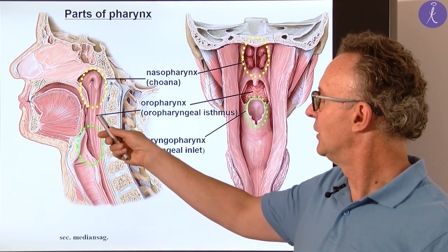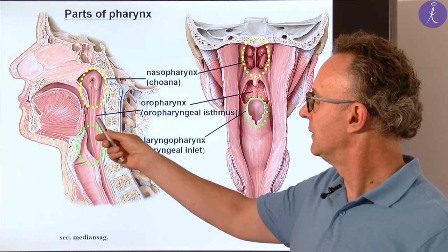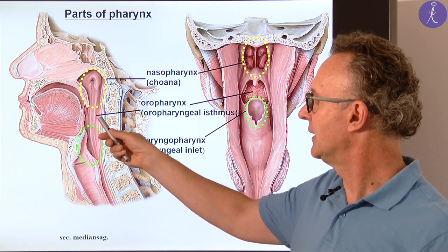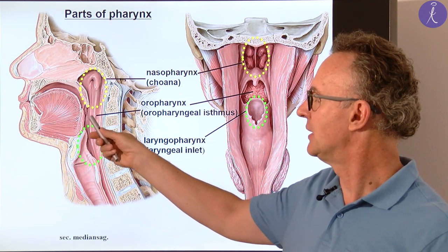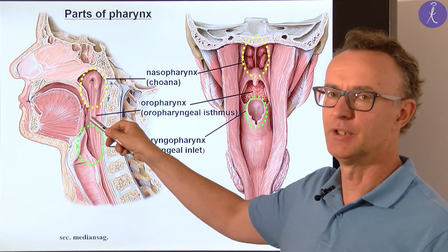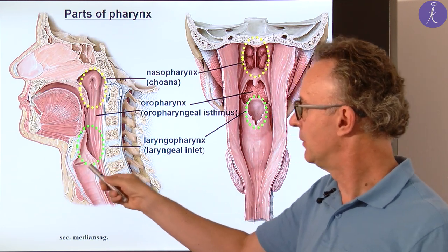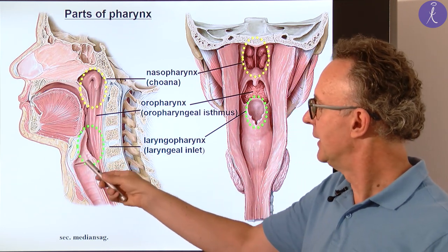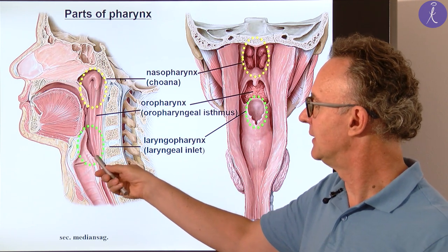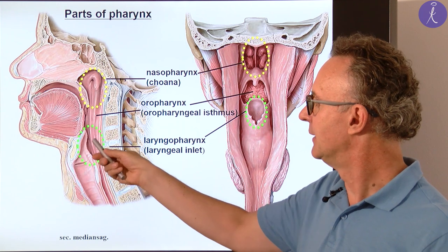The next one is the oropharynx, also called the oral part of the pharynx. This communicates with the oral cavity through the oropharyngeal isthmus. And the third one, labeled with green, is the laryngeal part of the pharynx — the laryngopharynx.